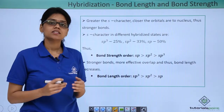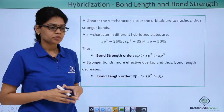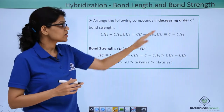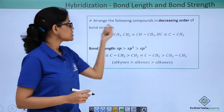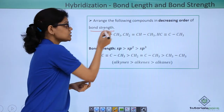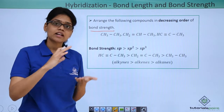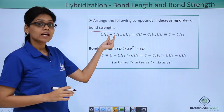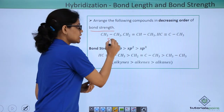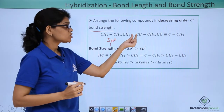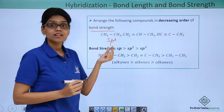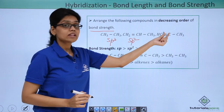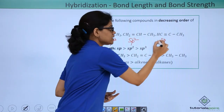Now let's understand the relation between bond strength and bond length by taking an example. In this question we have been asked to arrange the given compounds in decreasing order of bond strength. Remember, if bond length is asked, the order would be reversed. Here we need to identify: this is an alkane, a saturated system, so it has sp3 hybridization. Here you have CH2=CH-CH3, which is an alkene, so the hybridization is sp2 for those two carbons. And here we have an alkyne, so the hybridization involved is sp.